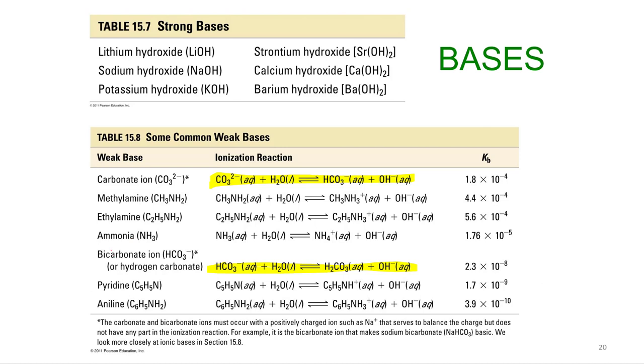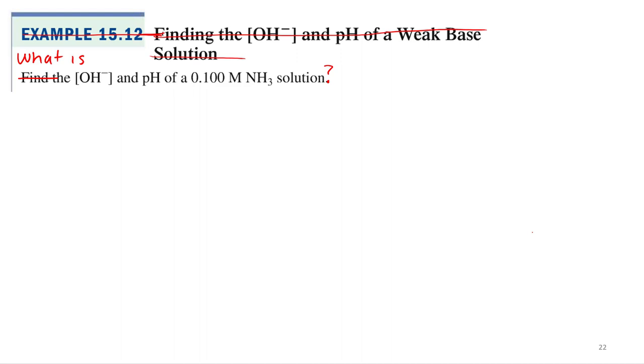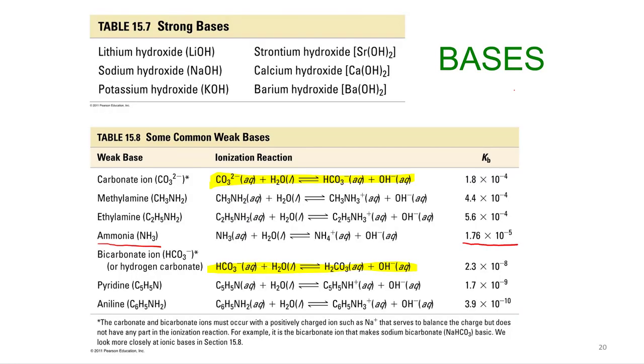A KB, we call it a KB, an equilibrium constant for a base. Here is ammonia right here. Here's the equation - we need to write that. It happens to be 1.76 times 10^-5.